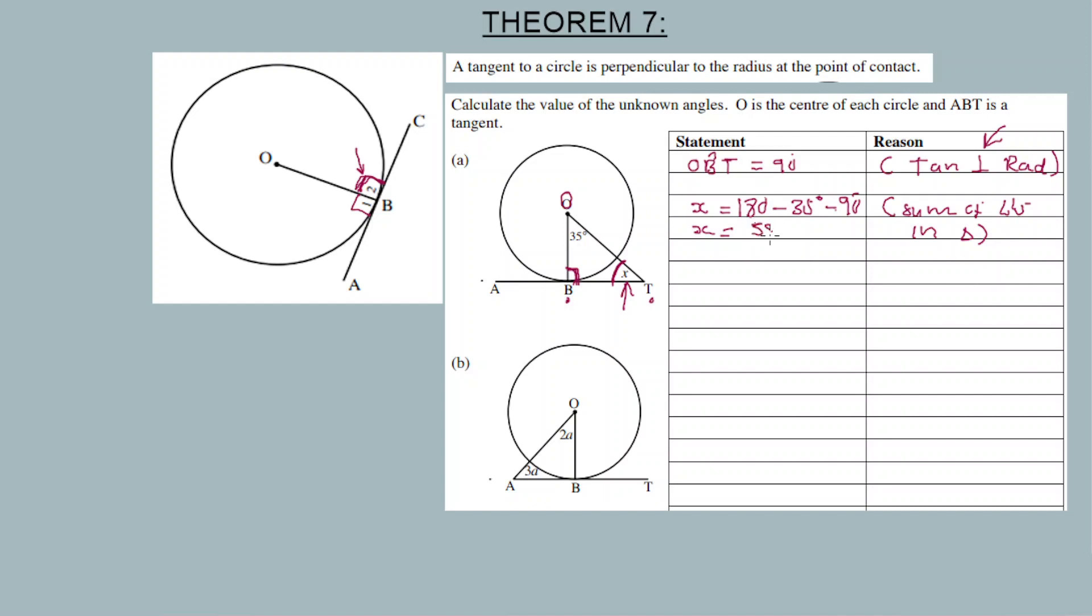Now let's calculate B. We need to calculate the value of the unknown angle. Obviously we cannot calculate all the angles now without calculating A. The angles are given in terms of A. This angle ABO is equal to 90 degrees again, tangent perpendicular to radius.